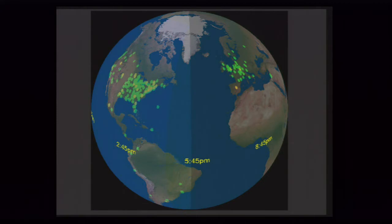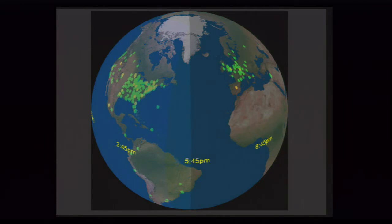The green dots indicate a meeting is happening at that location. We condensed all these meetings into one canonical day — we discarded the date. If you look at this visualization, at 2:45 p.m. on the East Coast there are a lot of meetings. Green means a global meeting; yellow means a local meeting with people in the general vicinity of where you are.